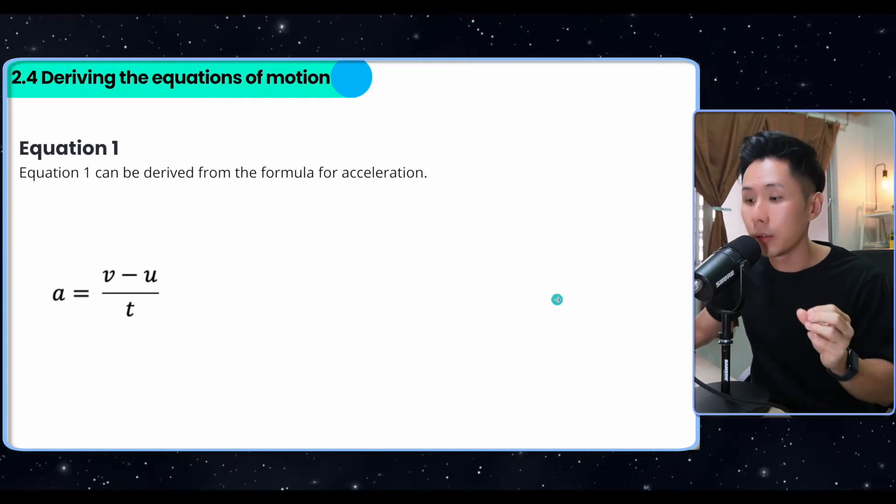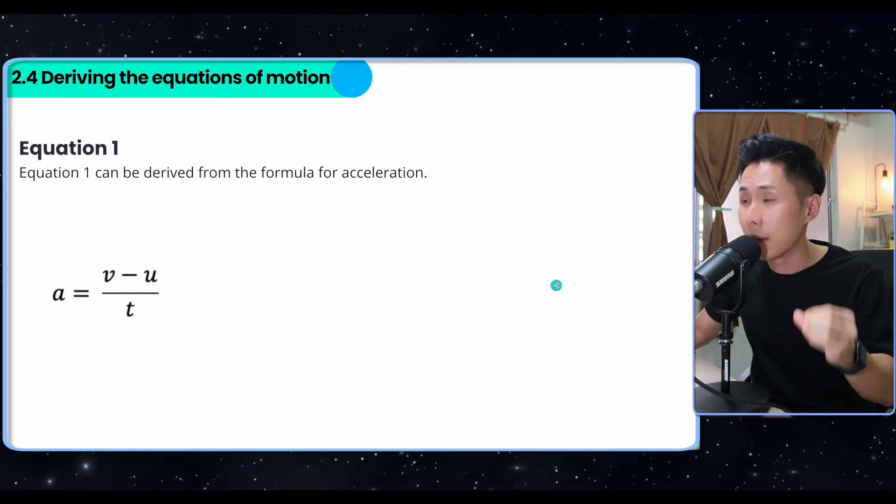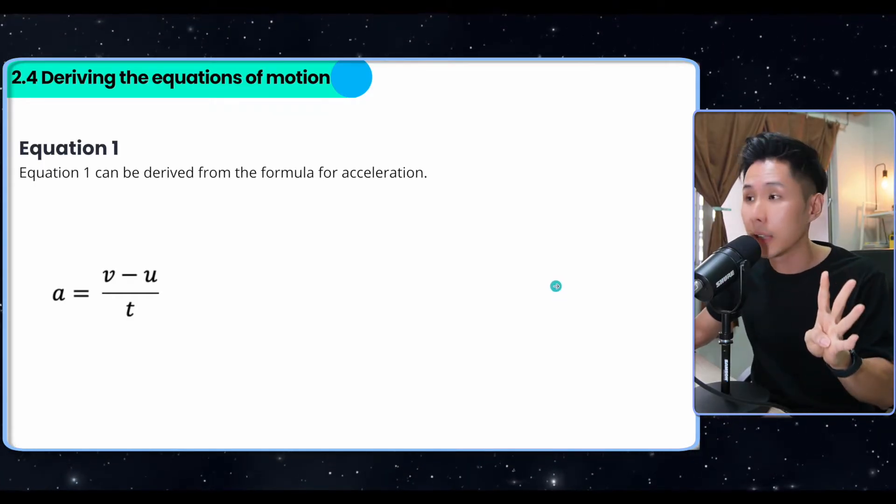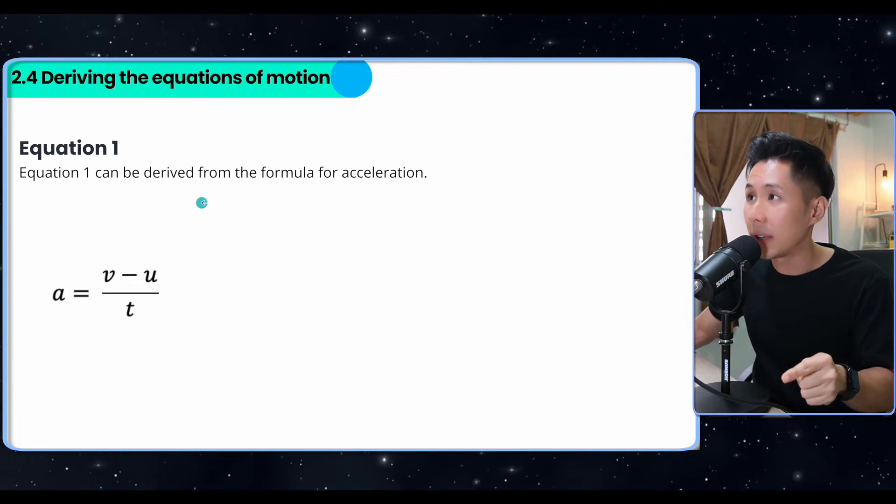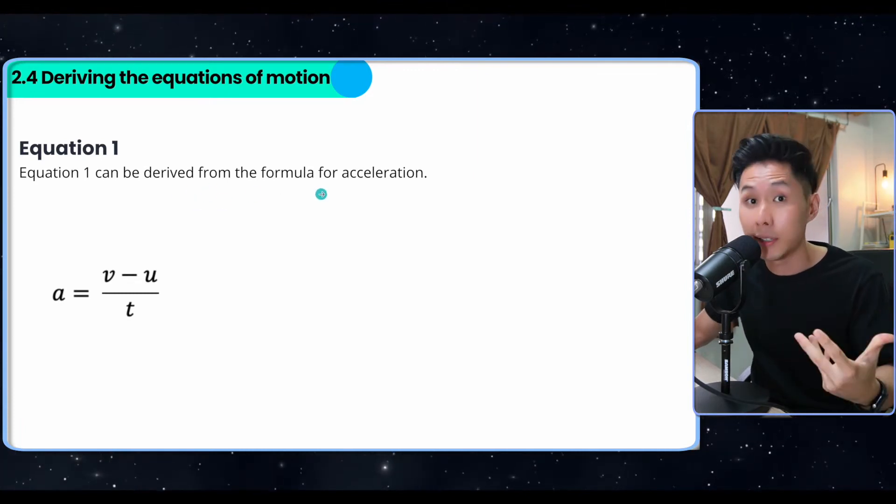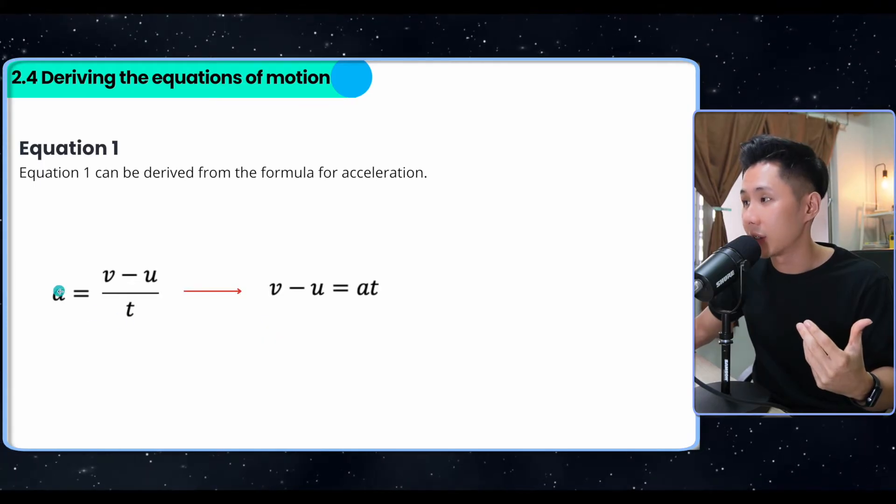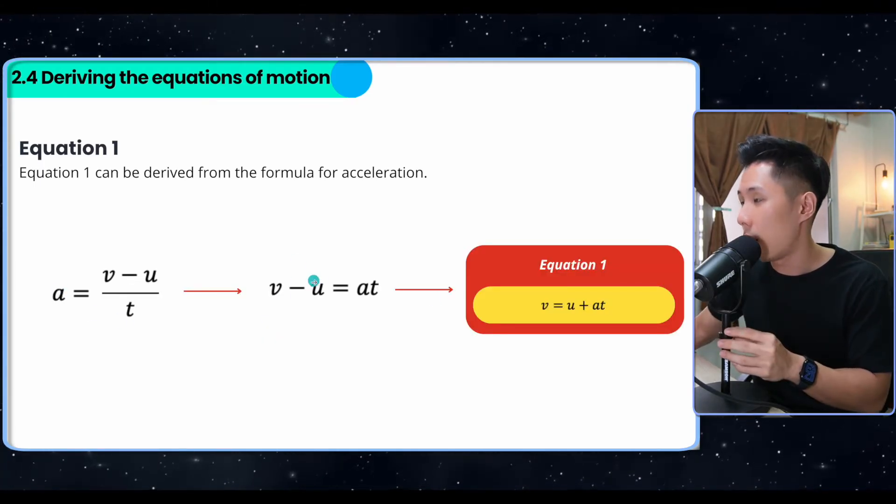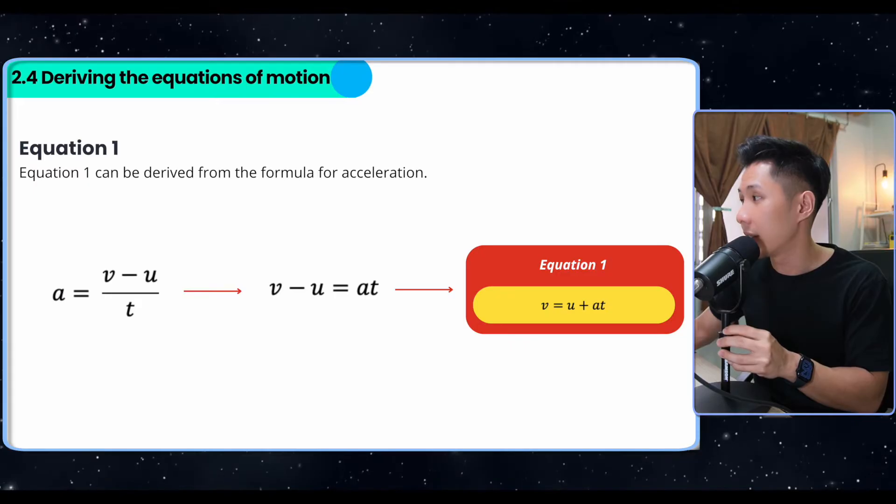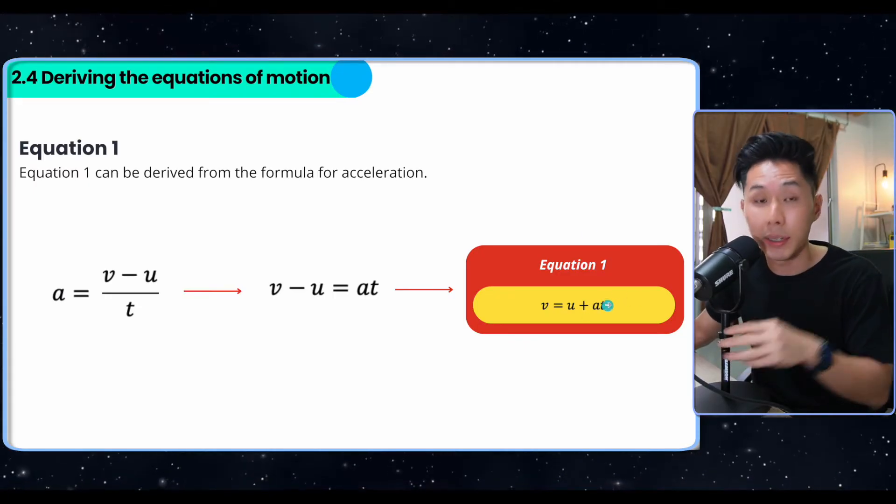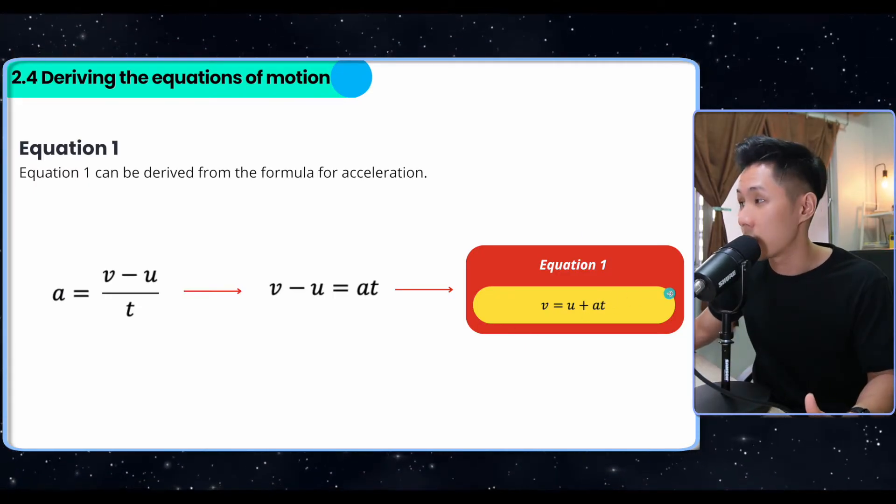So another thing that you will be required to do is to derive the formulas, the four formulas. I'm going to show you how to do that. Equation one can be derived from the formula for acceleration. So using this formula, you just move T to the other side and then move u all the way to the right hand side, and you will get equation one already. So that's pretty straightforward. That's how you get equation one.